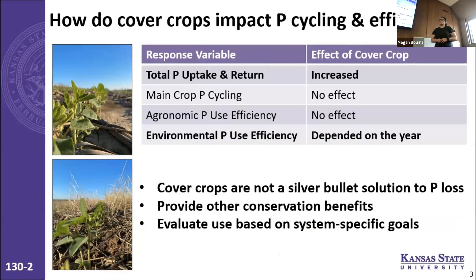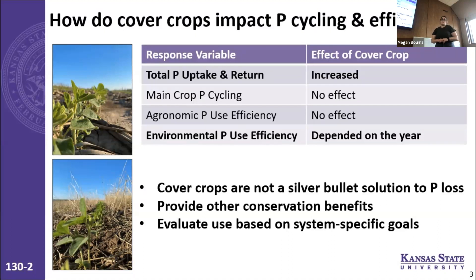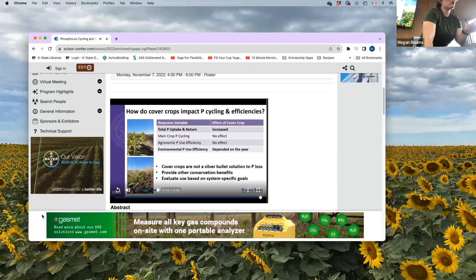Putting it all together: total phosphorus uptake and return was increased where we had cover crops, but cover crops weren't affecting main crop phosphorus access, utilization, or agronomic phosphorus use efficiency. The effect on environmental use efficiency — that percent P runoff metric — was variable year to year. Cover crops are evidently not a silver bullet solution to manage phosphorus loss. It certainly depends on conditions, your system, and the year, but they do provide conservation benefits, and their use should really be evaluated based on specific goals and on a case-by-case basis.